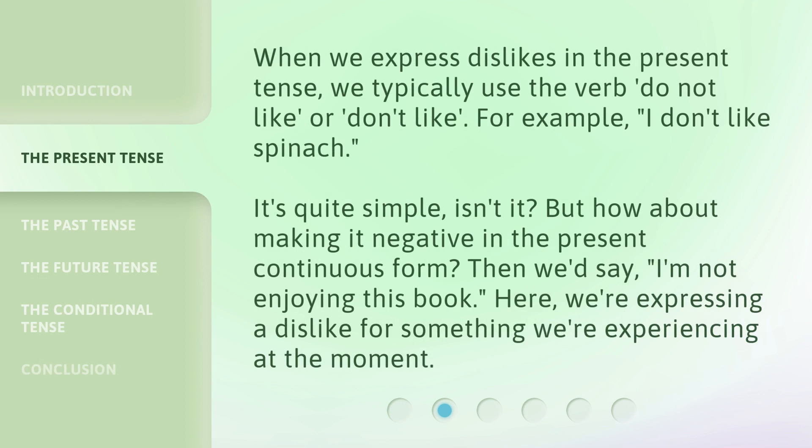When we express dislikes in the present tense, we typically use the verb 'do not like' or 'don't like'. For example, 'I don't like spinach.' It's quite simple, isn't it? But how about making it negative in the present continuous form? Then we'd say, 'I'm not enjoying this book.' Here, we're expressing a dislike for something we're experiencing at the moment.